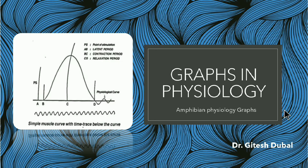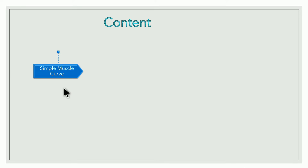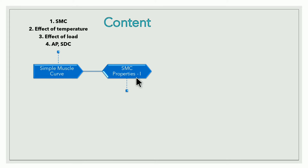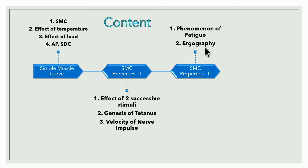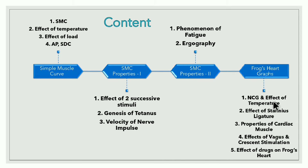In today's practical we will discuss: simple muscle curve, effect of temperature on simple muscle curve, effect of load, action potential, and strength-duration curve. Then simple muscle curve properties Part 1: effect of two successive stimuli, genesis of tetanus, velocity of nerve impulse. Part 2: phenomenon of fatigue and ergography. Lastly, frog's heart graphs: normal cardiogram, effect of temperature, Stanius ligature, properties of cardiac muscle, effect of vagus and crescent stimulation, and effect of drugs.